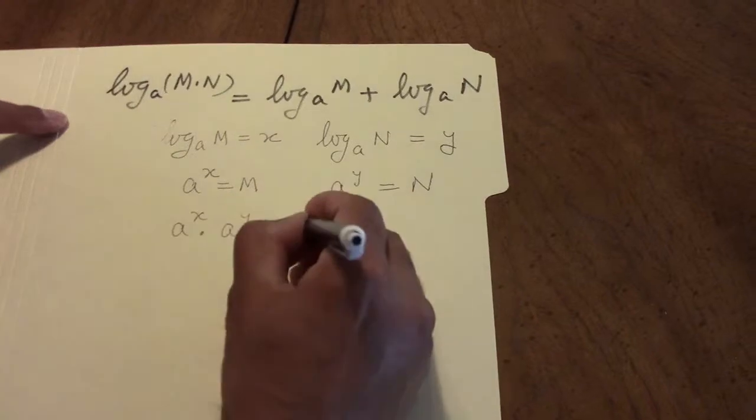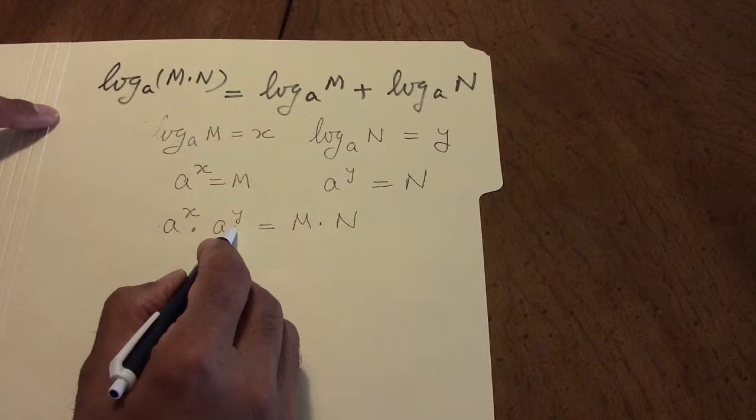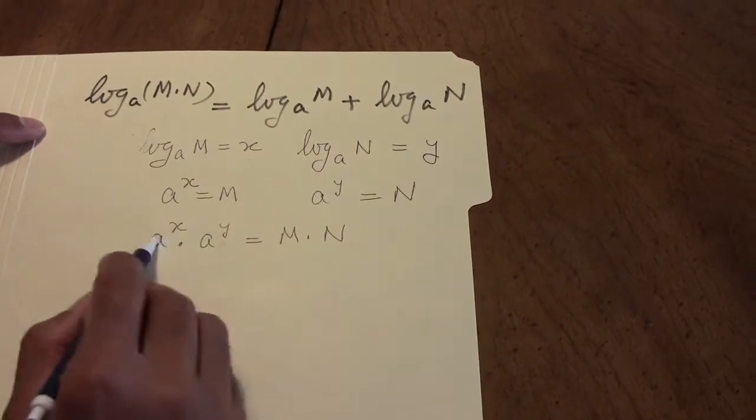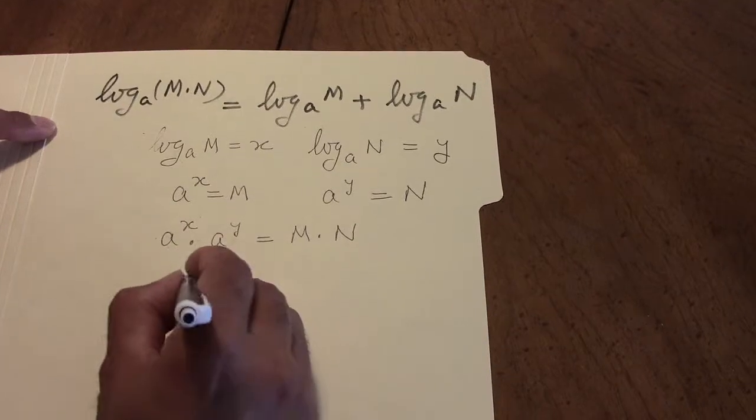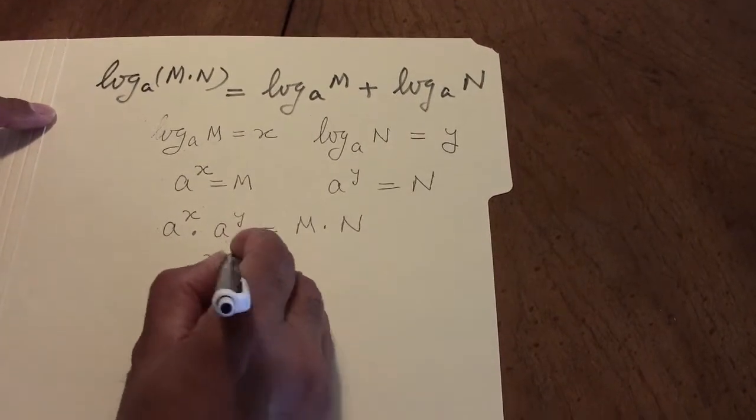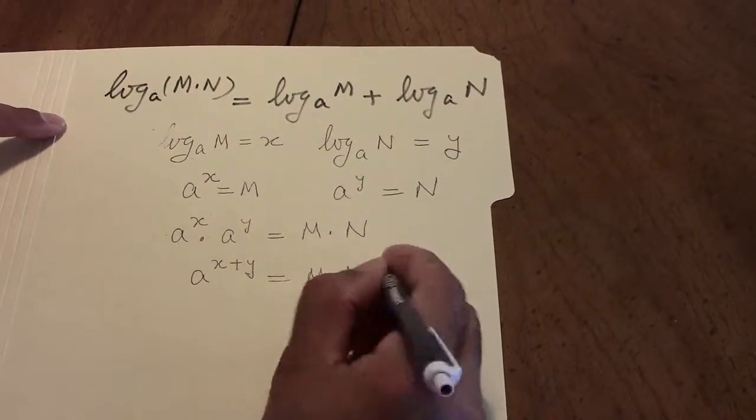And multiplying the exponentials, a to the power of x times a to the power of y is a to the power of x plus y equals m times n.